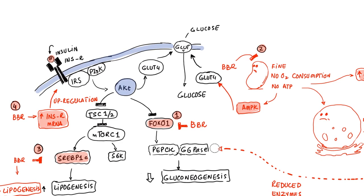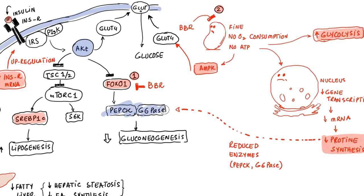Importantly, this study found that berberine reduces gluconeogenesis independent of insulin. Previous studies suggested berberine only worked through insulin pathways, but this study showed that even at fasting — when insulin levels are low — berberine still blocked gluconeogenesis in rats. Normally during fasting, the liver makes new glucose. Berberine prevents this independent of insulin levels, reducing fasting blood glucose — which is excellent.